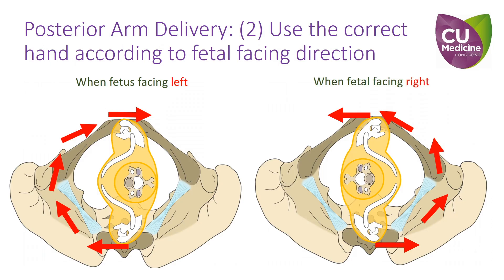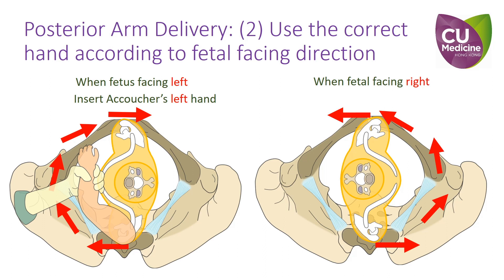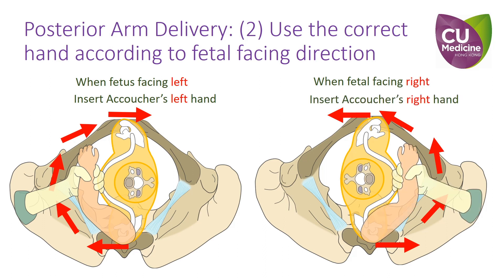The second important point to emphasize is the use of the correct hand to grasp the posterior forearm. After insertion of the hand at the posterior fourchette, the hand should easily move to the front of the fetus in order to grasp the posterior arm and facilitate rotation. Therefore, when the fetus is facing your left side, you should insert your left hand, and when the fetus is facing your right side, you should insert your right hand.